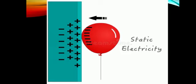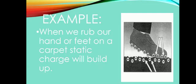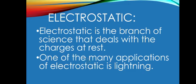See the diagram. Static electricity is the presence of an electrical charge on the surface of an object. What are the examples of static electricity? When we rub our hand or feet on a carpet, static charge will build up. See the diagram. When we rub our feet on a carpet, then imbalance of positive and negative charges will build static electricity.